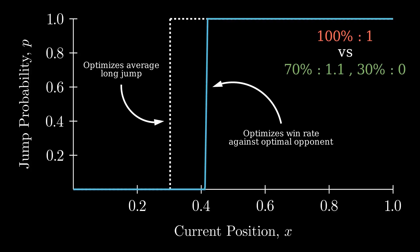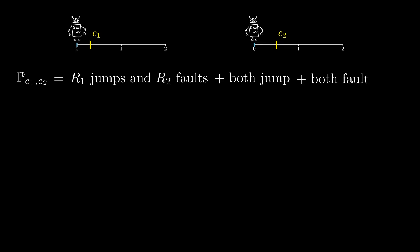We sketch a calculation of the probability that someone using a cutoff of C1 beats someone using C2. We can break this probability into three parts. Robot 1 wins if it jumps any distance and Robot 2 faults. Both jump and Robot 1 jumps further. And both fault, and then Robot 1 wins after restarting.